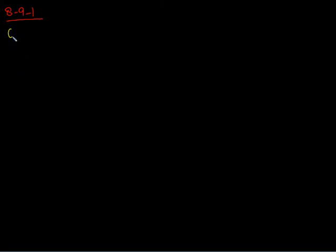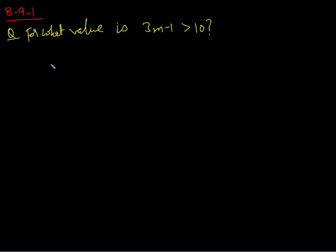Test 8, Section 9, Question 1. The question asks: for which of the following values of m will the value of 3m minus 1 be greater than 10? The answer choices are A: 4, B: 3, C: 2, D: 1, and E: 0.